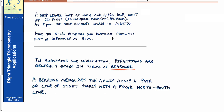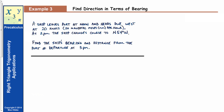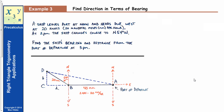Now let's set up the diagram. The port of departure is our starting point. The ship heads due west at 20 knots from noon to 2 p.m. — that's two hours at 20 nautical miles per hour, so it travels 40 nautical miles west before changing direction.